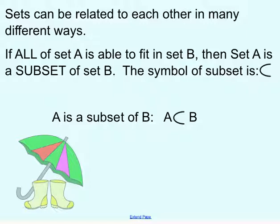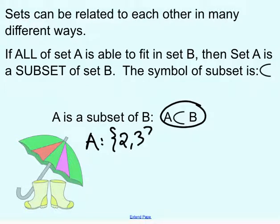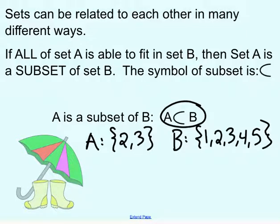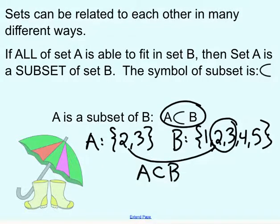Sets can be related in many different ways, and one way is using subsets. A subset means that all of set A is able to fit in set B. So we would say set A is a subset of set B, shown with the subset symbol. For example, maybe A is the set {2, 3} and B is the set {1, 2, 3, 4, 5}. B is a lot bigger, and we can see that 2 and 3 are completely within A, so all of set A can fit into set B.